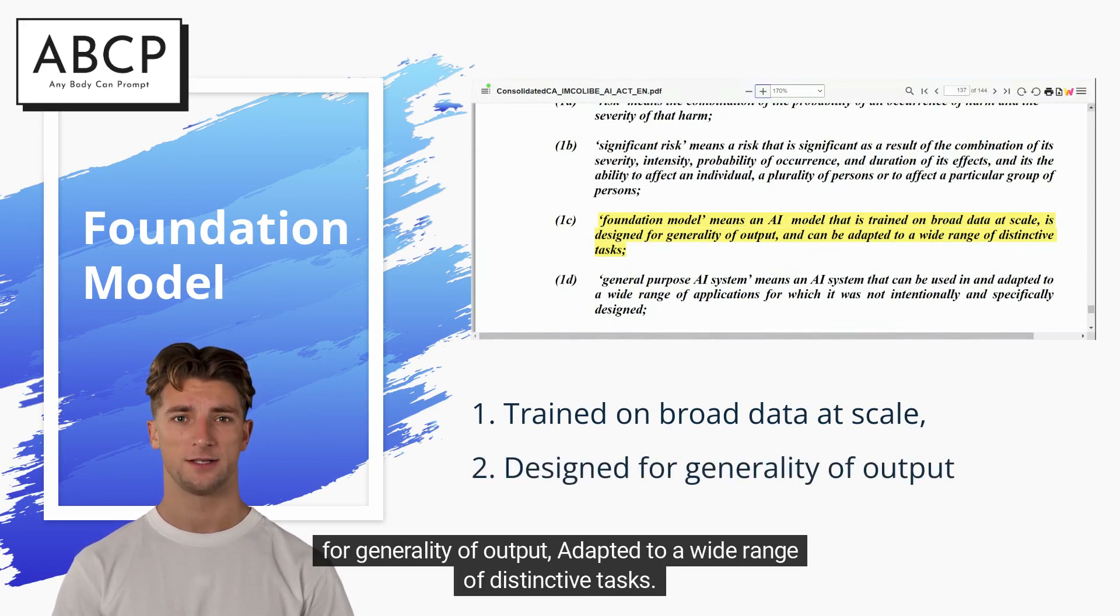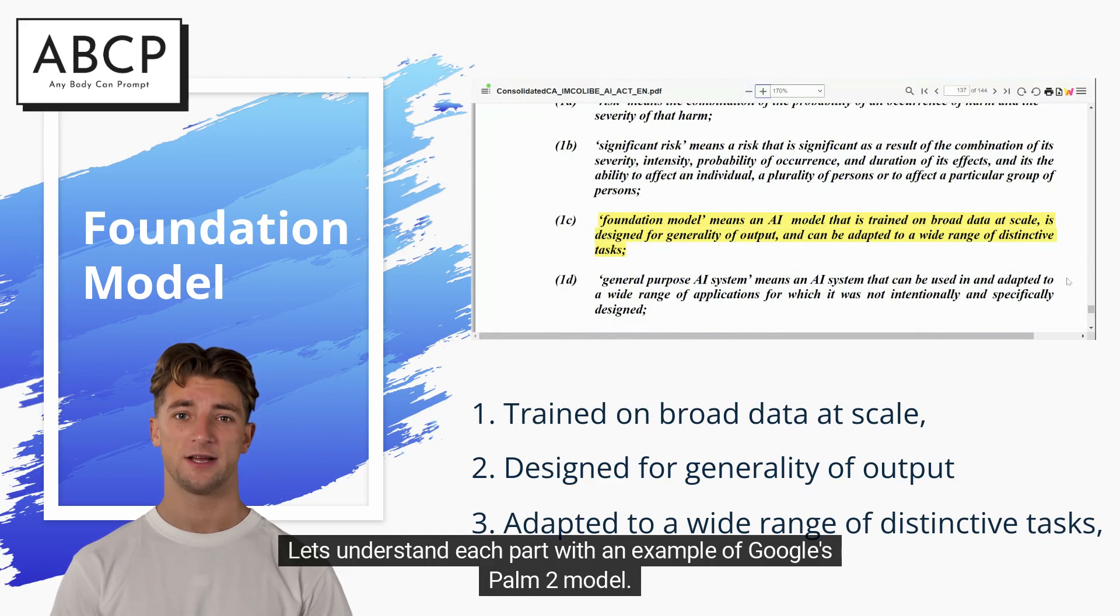for generality of output, adapted to a wide range of distinctive tasks. Let's understand each part with an example of Google's Palm 2 model.